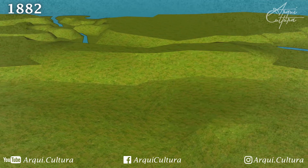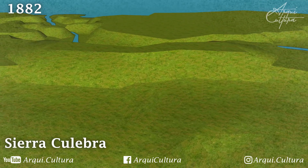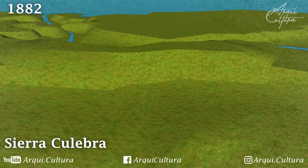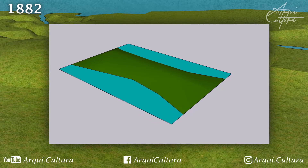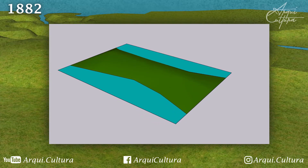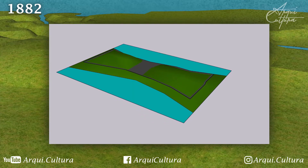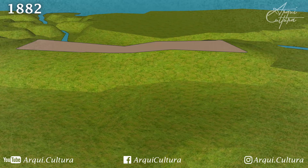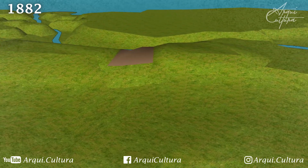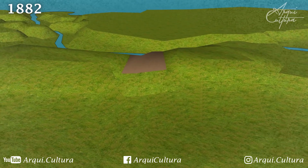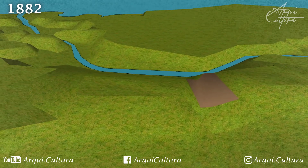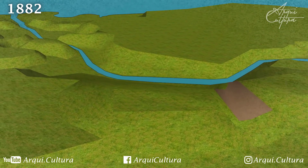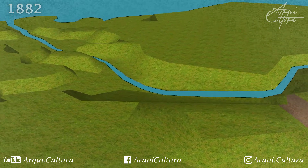The first obstacle was the Culebra Cut. Remember that to create a continuous canal, both oceans and the canal itself must be at the same level, so all this terrain had to be removed to reach sea level. It was not an easy task — rain, landslides, and tropical diseases hindered progress until, due to various technical and political reasons, the project was suspended.